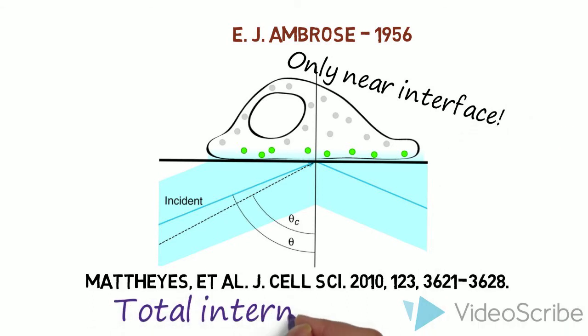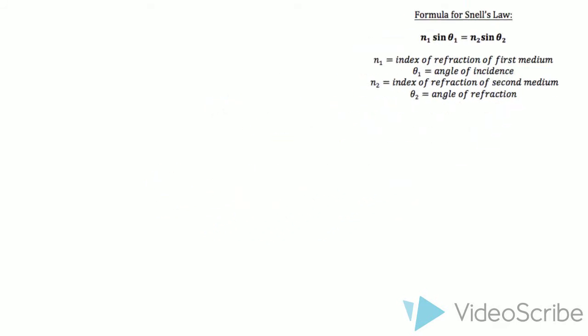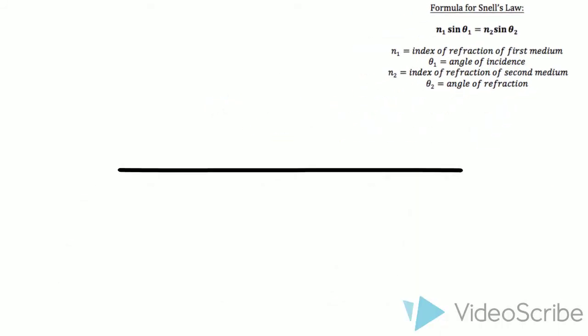Total Internal Reflection occurs when light is totally reflected off a surface. Snell's Law equation describes the bending of light where there is a change in refractive index passing from one material to another. The variables n1 and n2 are the refractive indices of the respective media,